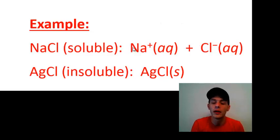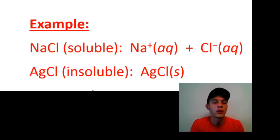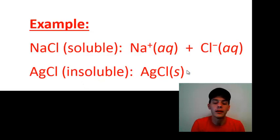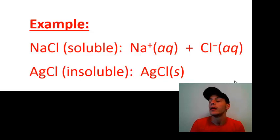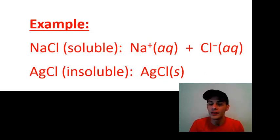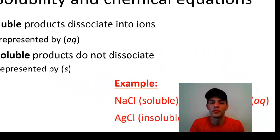This is a better representation of an aqueous solution of sodium chloride. For an insoluble compound like silver chloride, AgCl, it does not break up into ions, so writing it as two individual ions would be inappropriate. Instead we give it the formula AgCl with an S for solid. Again, S stands for solid, not soluble.